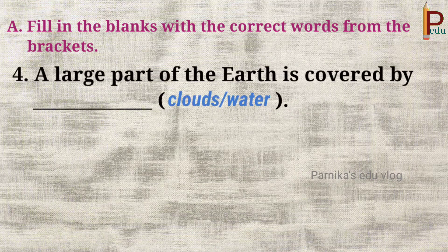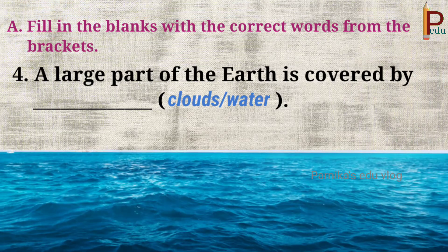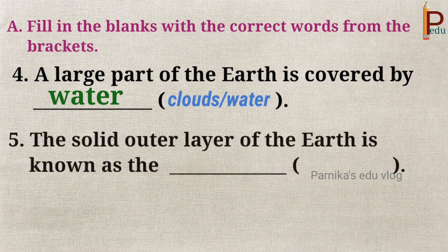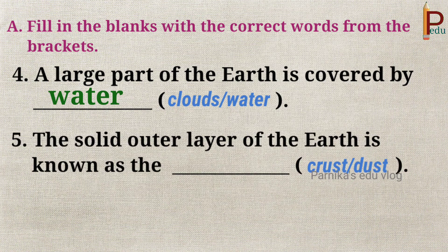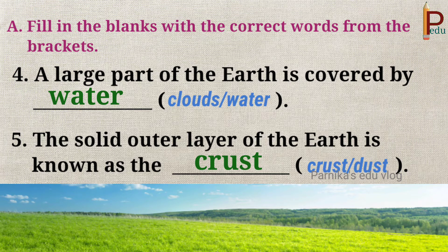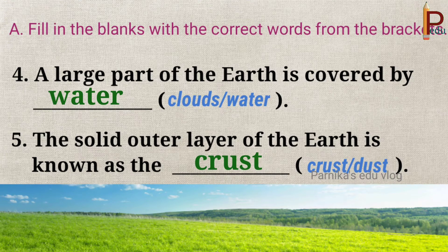Fourth, a large part of the earth is covered by dash. Answer: water. Fifth, the solid outer layer of the earth is known as the dash. Answer: crust, which is also known as the lithosphere.